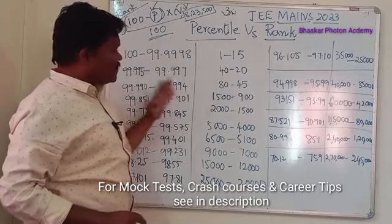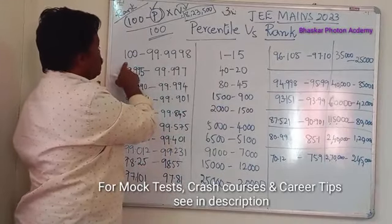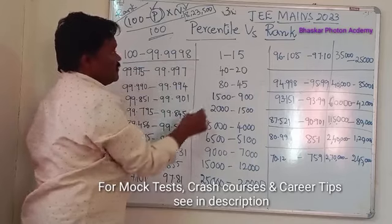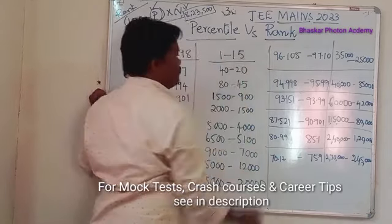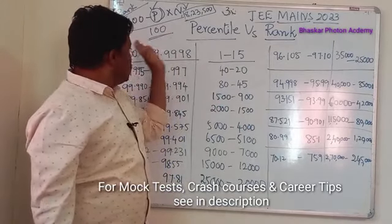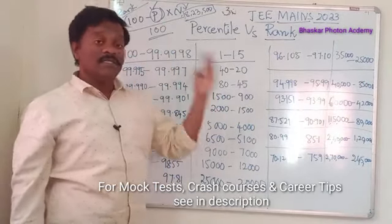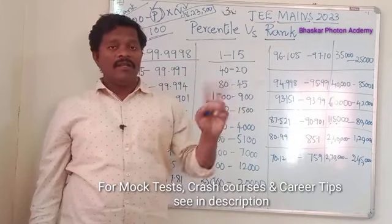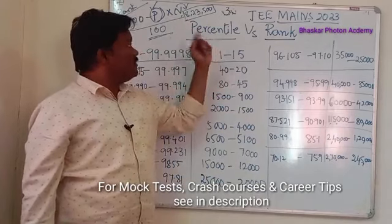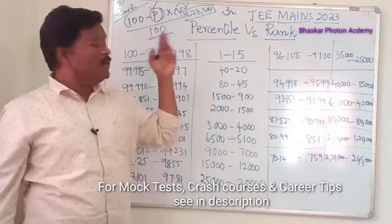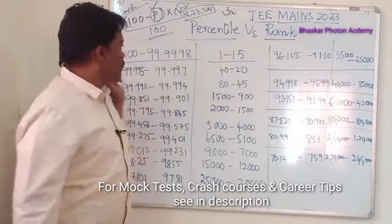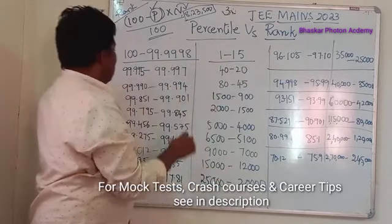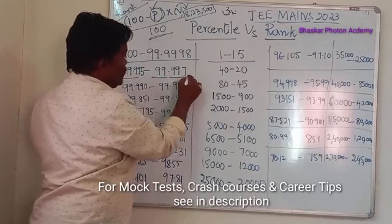Based on this formula we get approximate figures. Candidates who scored a percentile in the range of 100 to 99.9998 get an All India Rank of approximately 1 to 15. Note that the best score across Session 1 and Session 2 is considered — whichever percentile you got, based on the formula you get your rank. For percentile 99.995 to 99.997, ranks are in the range of approximately 20 to 40.